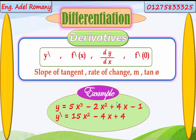Third term: 4x. This x is to the power of 1. Power times coefficient: 1 by 4 gives us 4, and x to the power of 0 disappears because it equals 1, so 4x differentiates to just 4. Any constant — the differentiation is 0, we don't write it. Negative 1 becomes 0. So if we have 4 terms in the main function, the differentiation becomes 3 terms because the constant term becomes 0.